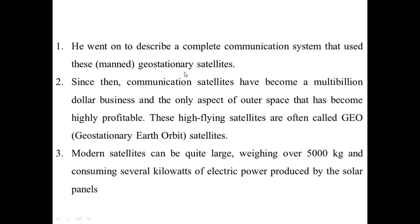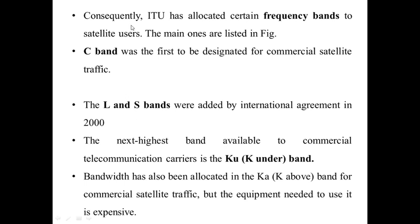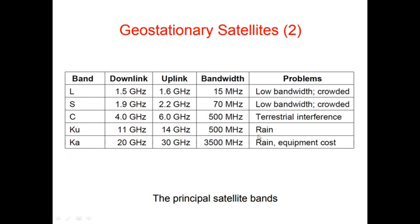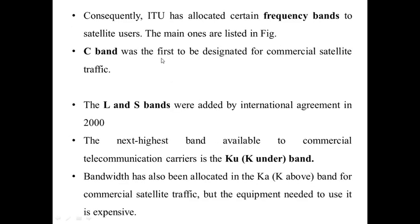Complete communication systems are used with geostationary satellites, and these satellites will become a multimillion dollar business. Modern satellites weigh 5,000 kilograms and consume several kilowatts of electric power produced by solar panels. The ITU — International Telecommunication Union — has allocated specific frequency bands to satellite users. The C band is used for commercial satellite. L and S bands are added by international agreement. The next highest band is the K band, with bandwidth also allocated to KA — K above — for commercial satellite traffic.